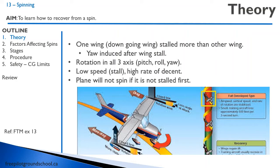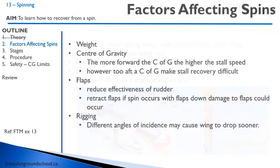The airspeed is low because the aircraft is stalled, and there is a high rate of descent. The airplane will not spin if it is not stalled first. Remember from our last lesson — an aircraft can stall at any attitude. In a spin you're going almost straight toward the ground, maybe 45 degrees, and the aircraft is completely stalled. Even when pitched steeply nose-down, you are still stalled. There are a number of factors affecting spins.